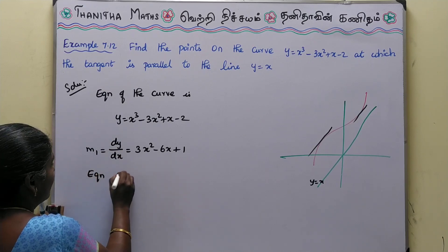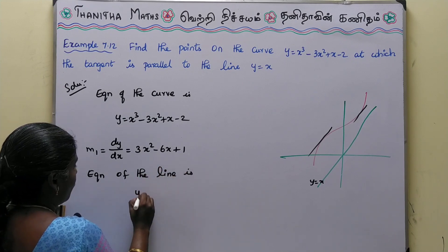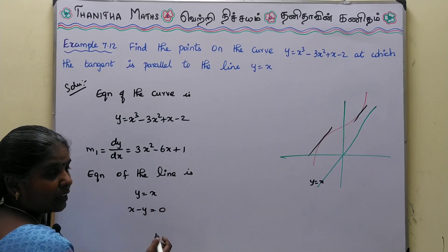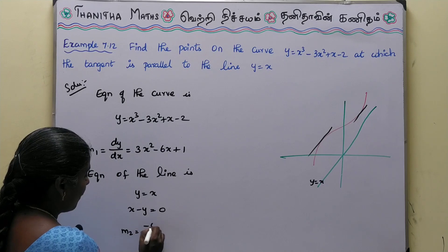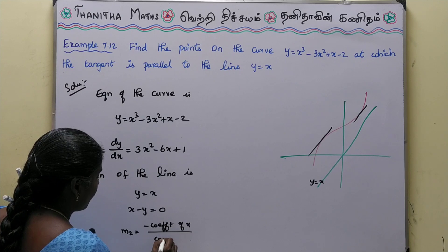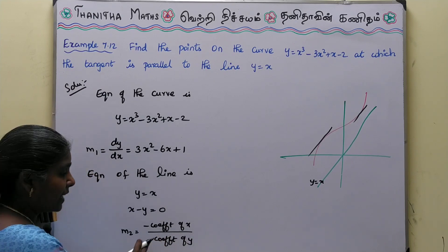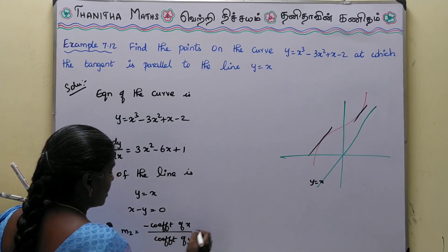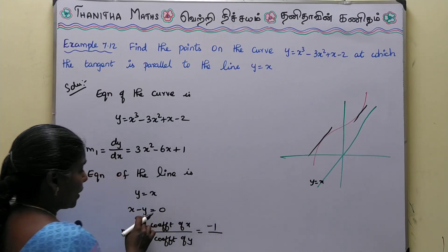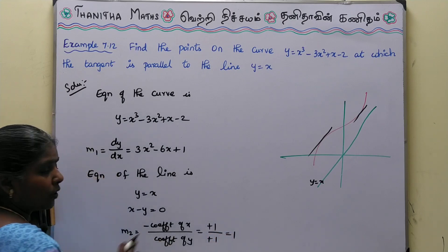Now, equation of the line: what is the line? The line is y = x, which can be written as x - y = 0. The slope m2 = minus coefficient of x divided by coefficient of y. That is minus 1 divided by minus 1. Minus and minus cancel, so m2 = 1.